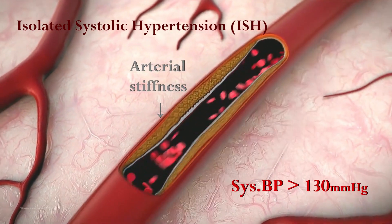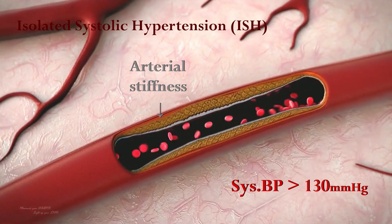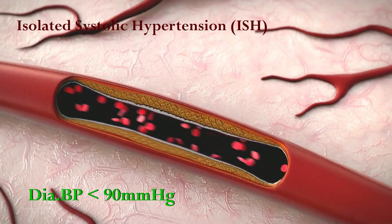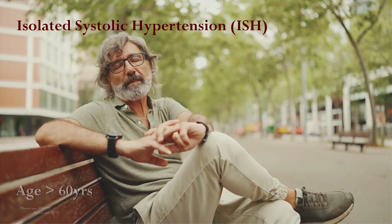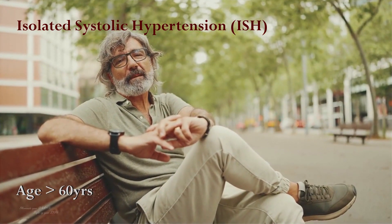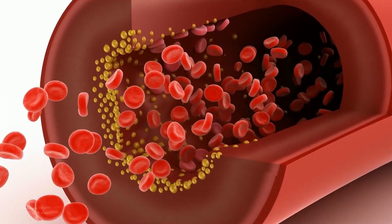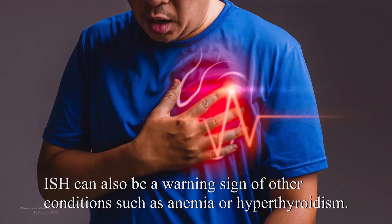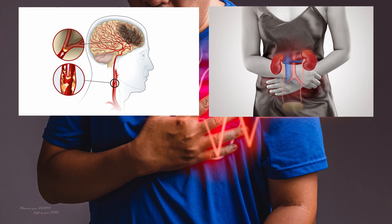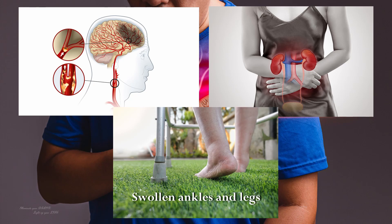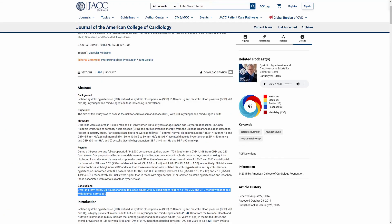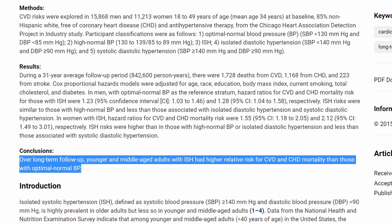Isolated systolic hypertension occurs when systolic pressure rises above 130 while diastolic pressure stays near the normal range, below 90. This type is most common in people over 60 and is mainly caused by loss of elasticity in the arteries. Like other types of high blood pressure, it can raise the risk of heart attack, stroke, kidney disease, heart failure, and other health conditions. Studies also found that isolated systolic hypertension can increase the risk of heart disease and death in young adults.